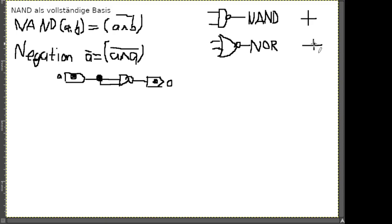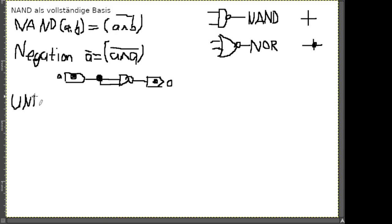Bei Schaltzeichnungen gibt es Kreuzungen ohne Verbindung und Abzweigungen mit Punkt als Verbindungsmarkierung. Genauso überlegen wir jetzt, wie wir an das UND rangehen – UND ist einfach A und B.